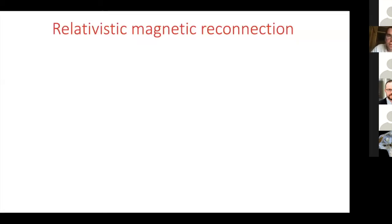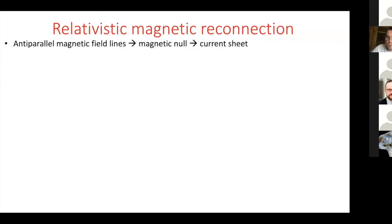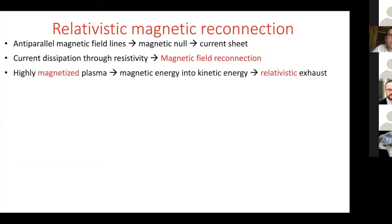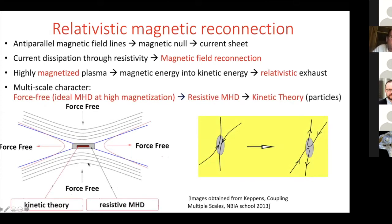Now what is relativistic magnetic reconnection that we think can explain these flares? If we have a very simple setup of anti-parallel magnetic field lines, in between the field lines you have a magnetic null or a current sheet, and magnetic energy can dissipate through a resistivity — that's what we call reconnection. In a highly magnetized plasma there is a lot of magnetic energy to be dissipated into kinetic or thermal energy, and we get a relativistic exhaust from the current sheet. This is really a multi-scale problem even if it's unrelated to the accretion disk of a black hole.